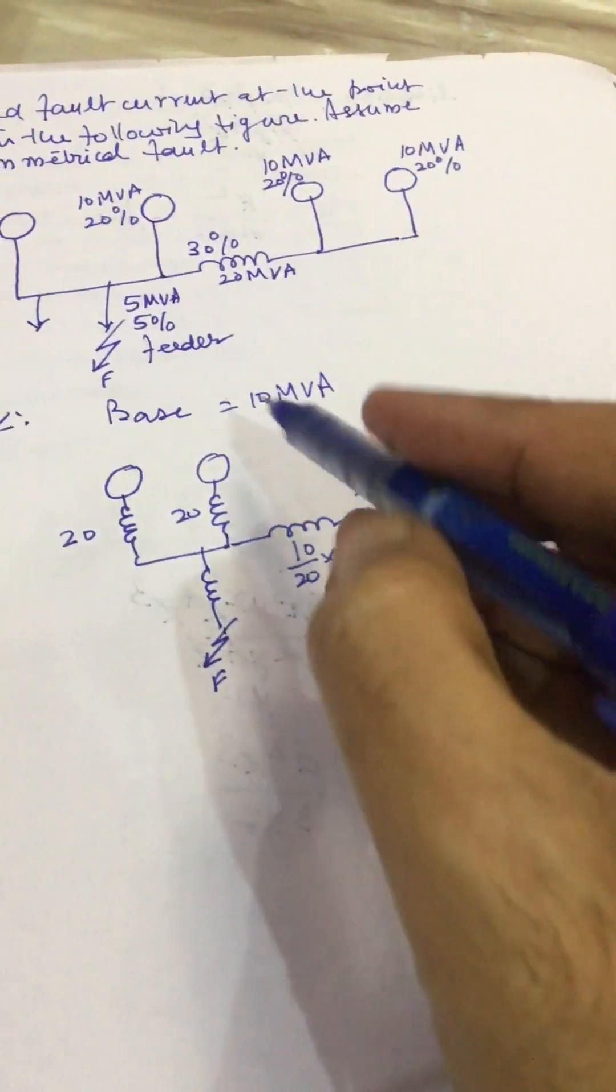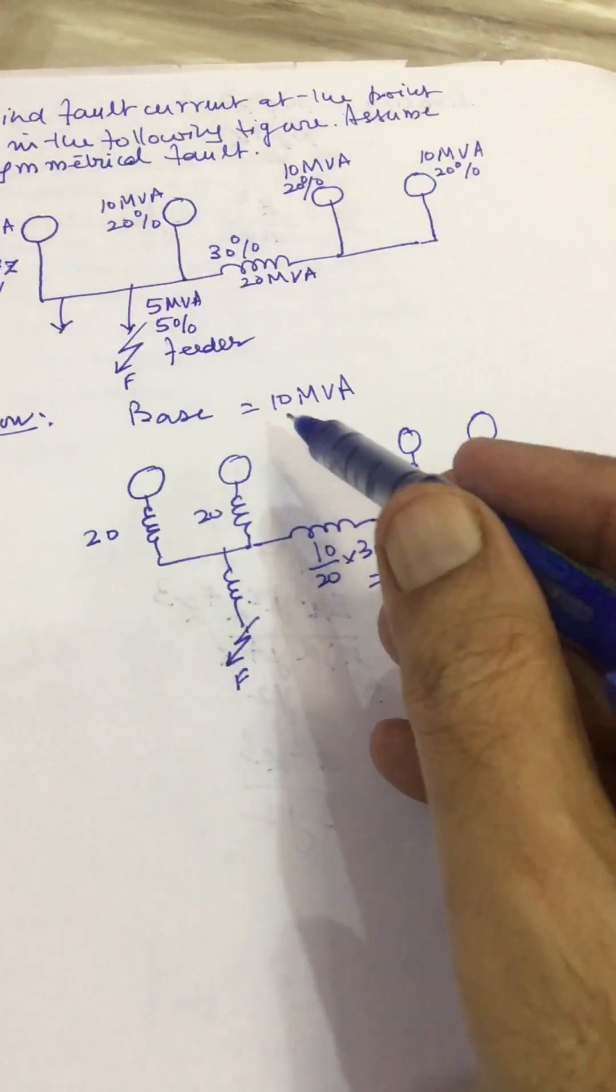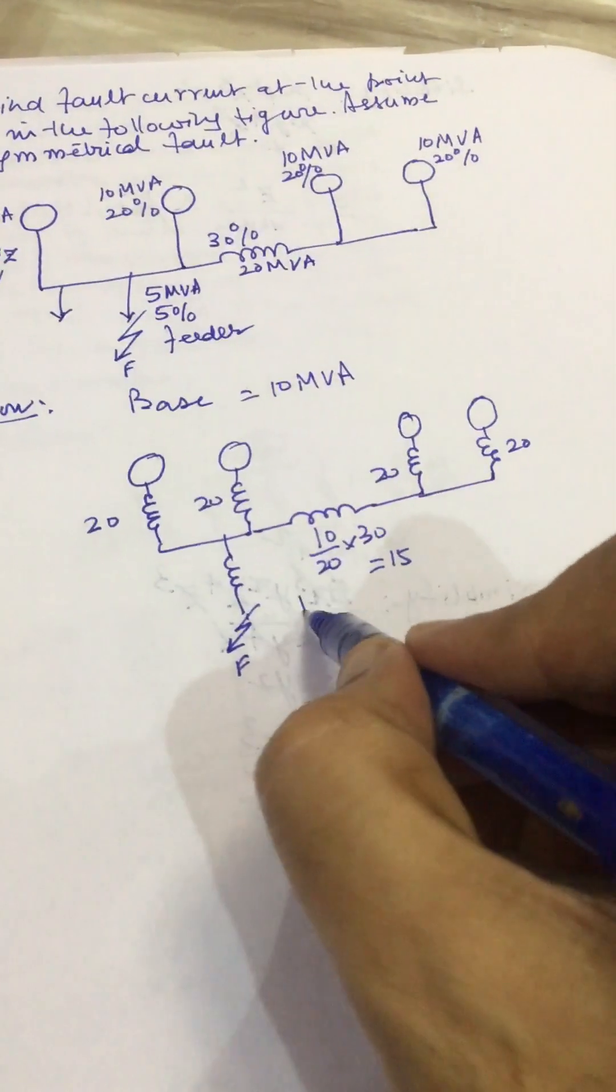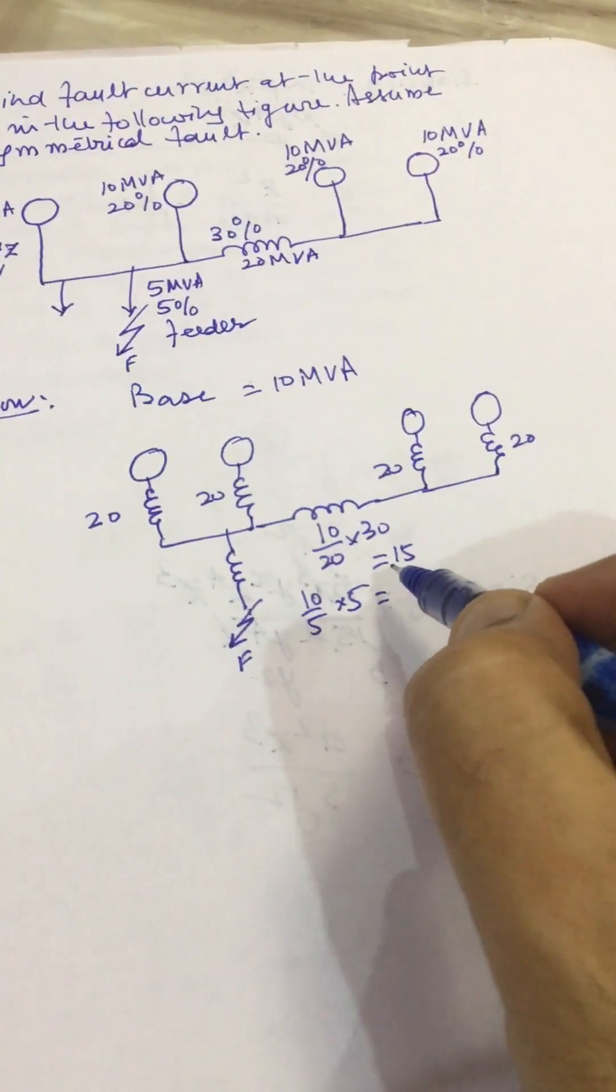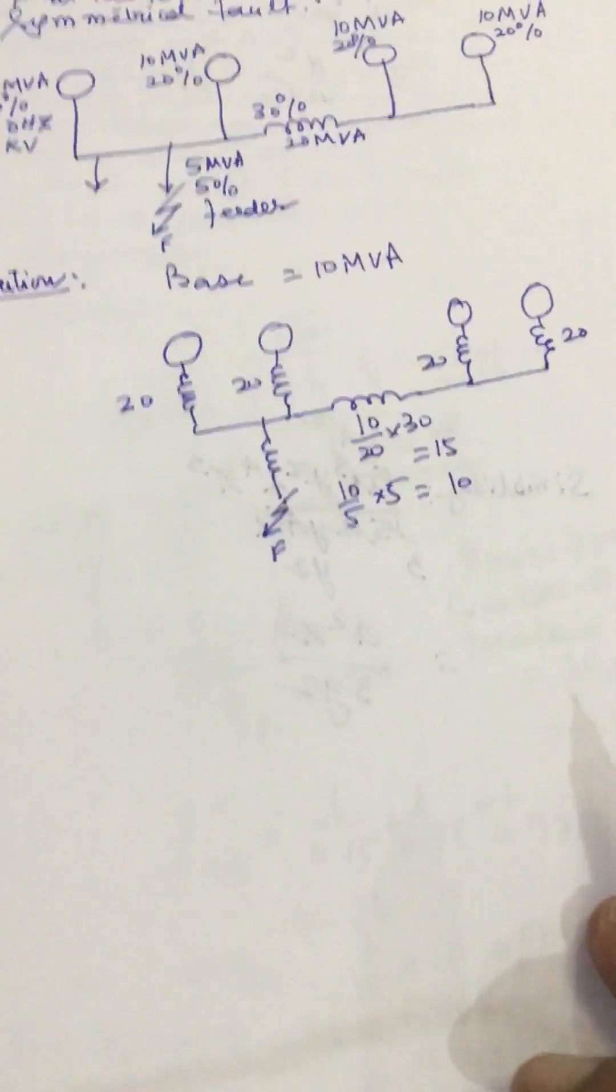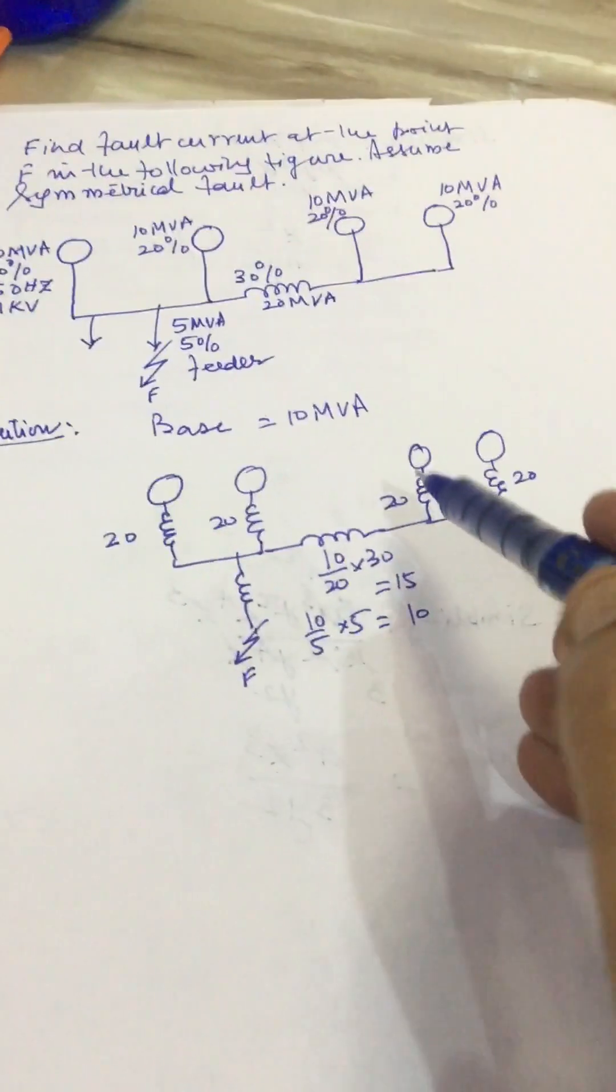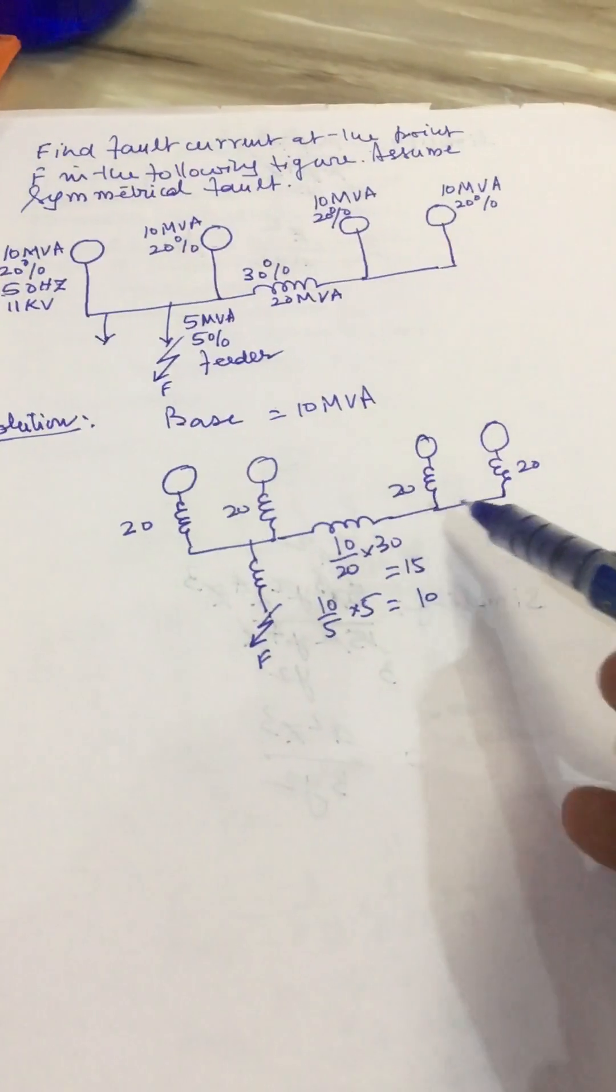This is 5 MVA at 5 percent. So this will be 10 divided by 5 multiplied by 5, so this will be equal to 10 percent. Now we have converted this diagram to reactance diagram.